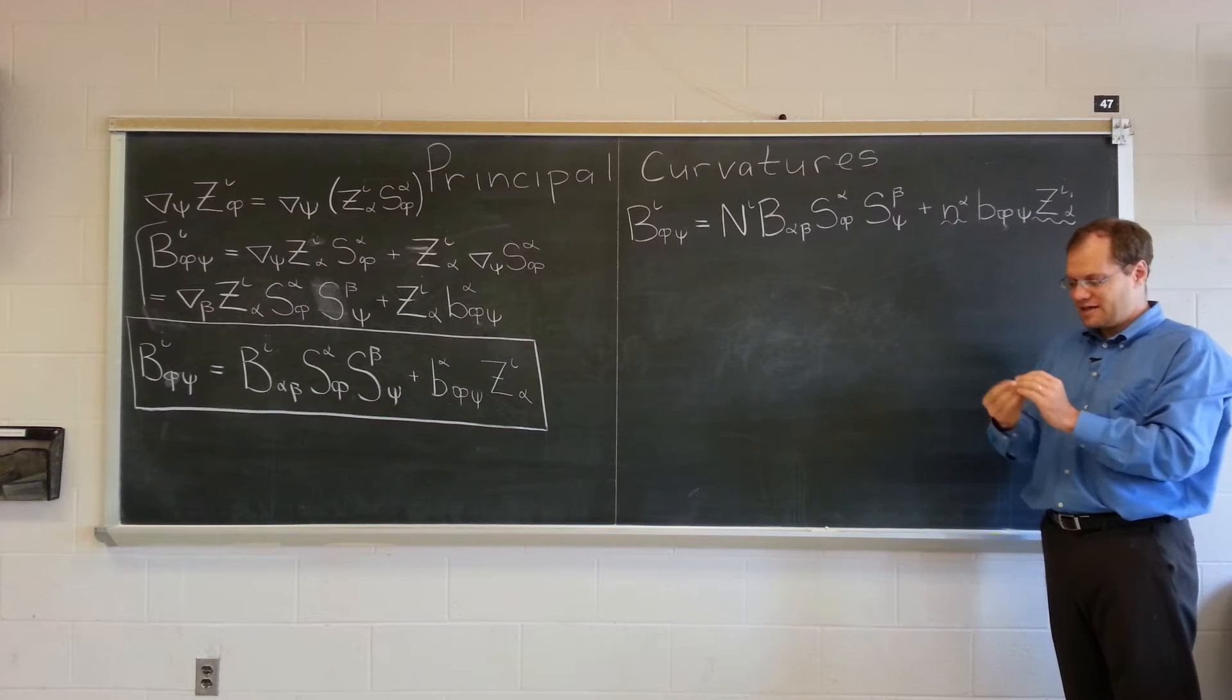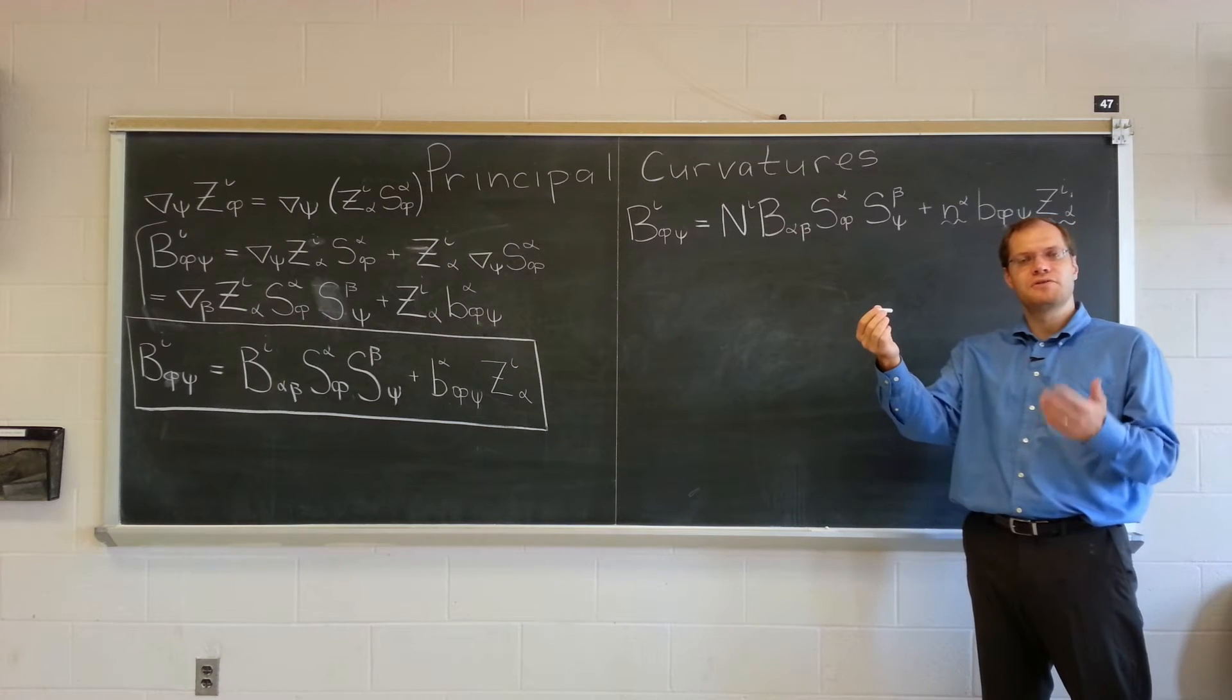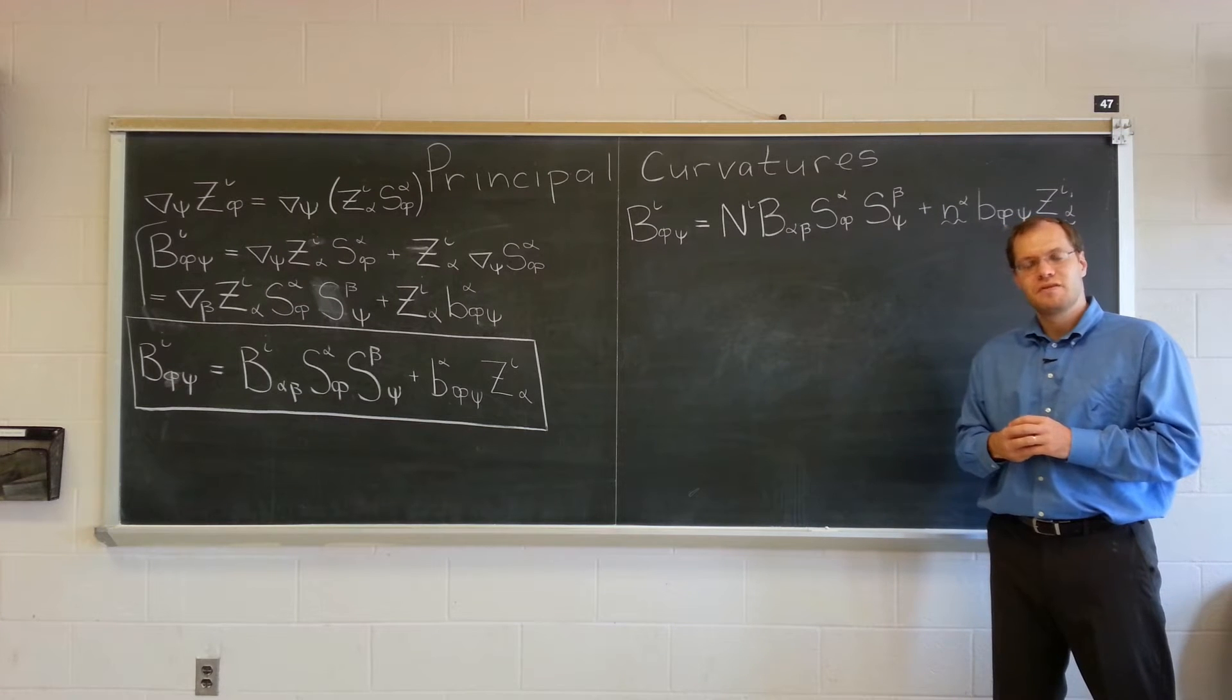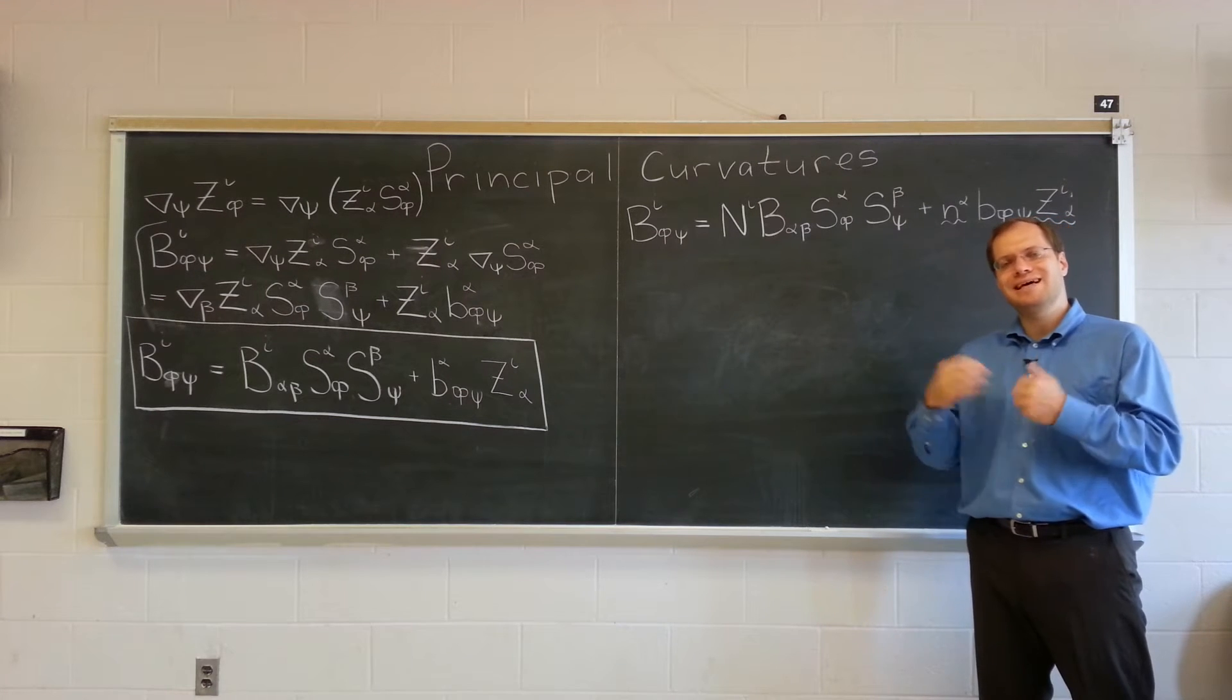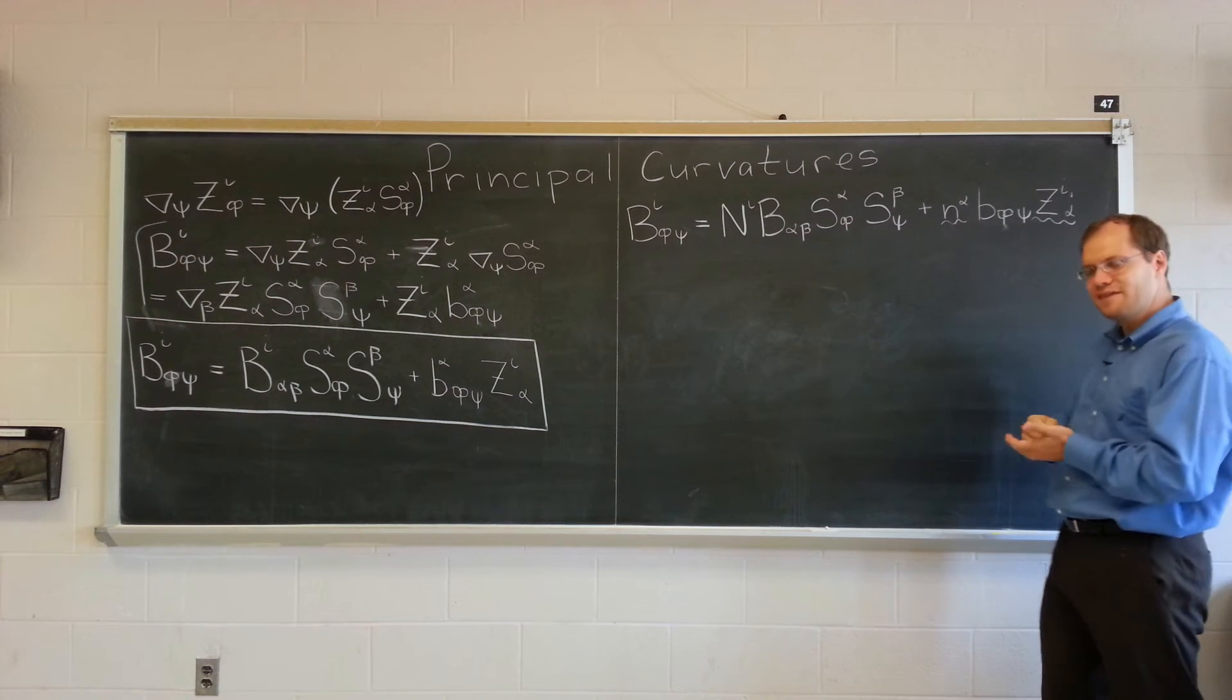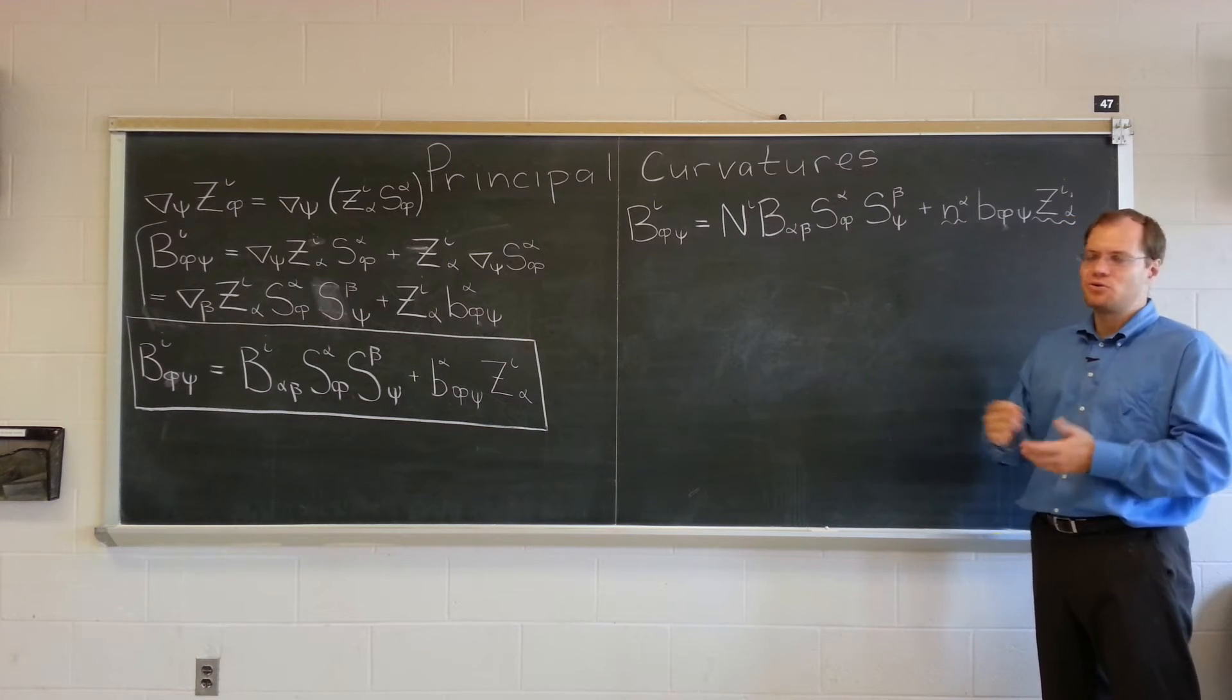But you can also think of that little yellow vector as a vector in the three-dimensional space. Because yes, its base is on the curve, but it points to somewhere in the three-dimensional space. So you can ask what are its components with respect to the three-dimensional ambient basis. And those would be called little n i. And from everything we've discussed before, of course, little n i equals little n alpha times Z I alpha. This is that lifting off of the plane into the space, translating surface components to ambient coordinates.